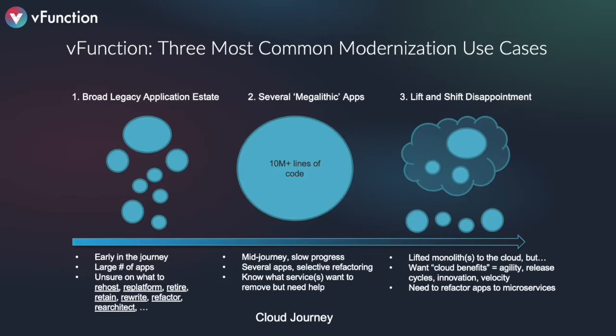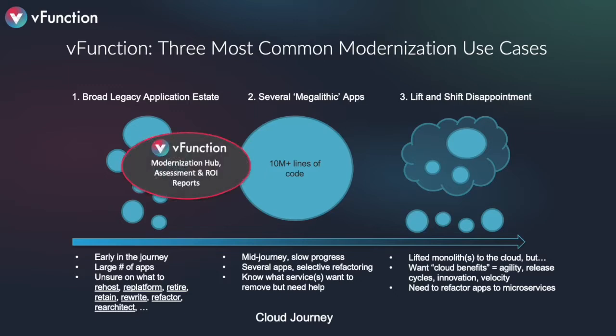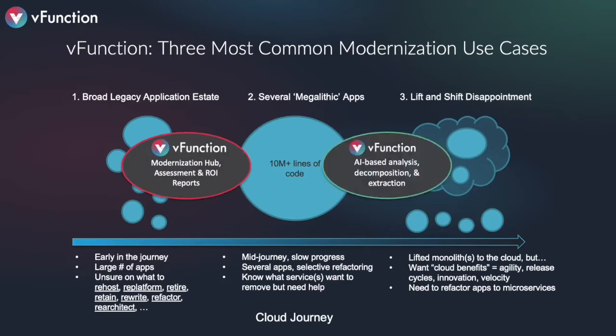There are also customers who have already lifted and shifted to the cloud — running in a container in a cloud environment — but just re-hosted or re-platformed their application. Now they're looking to take advantage of all the cloud benefits. vFunction can help through its modernization hub, assessment and ROI reports, and its AI-based analysis, decomposition, and extraction capabilities.